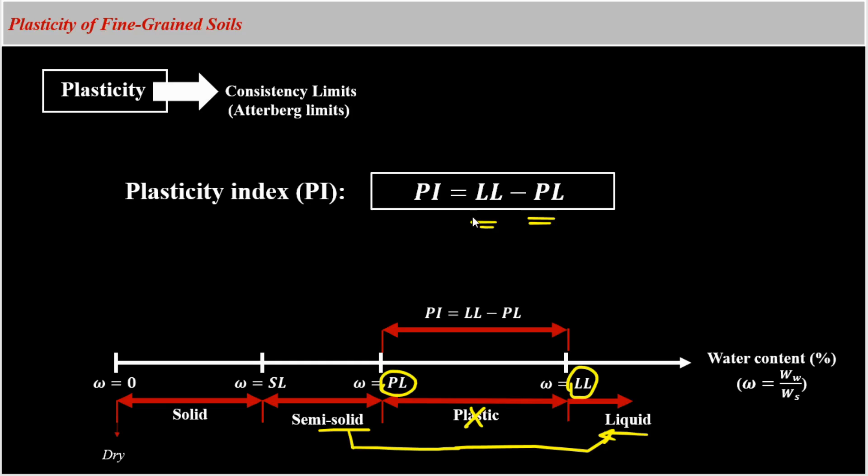And if you recall, a few minutes ago in this video, I mentioned plasticity is the property of cohesive soils. And the soils that are not plastic are called granular soils. But generally speaking, soils with high PIs tend to be clay, soils with lower PIs tend to be silts, and soils with PI equals zero tend to have little or no silt or clay.